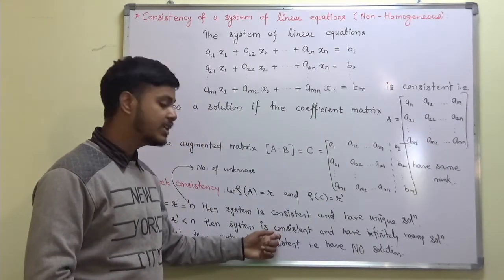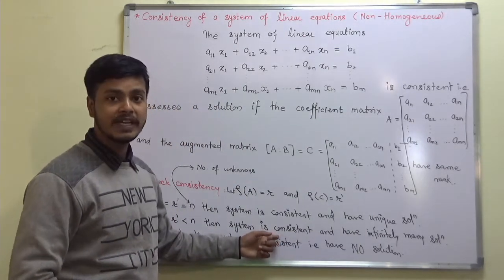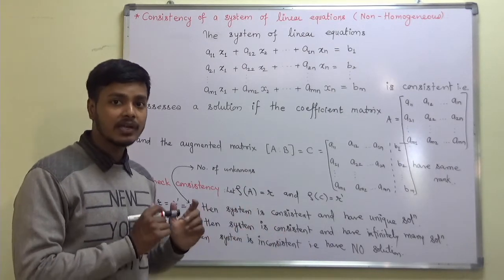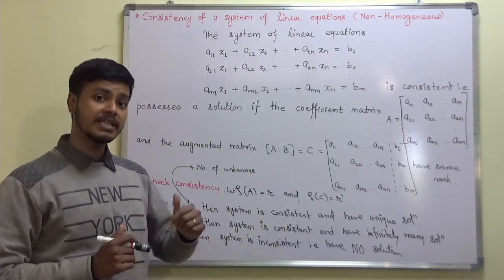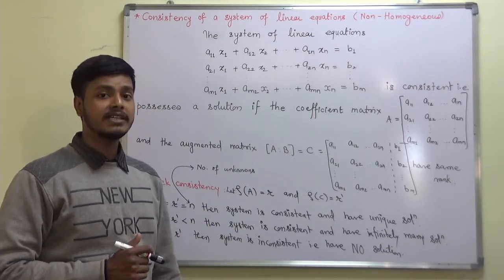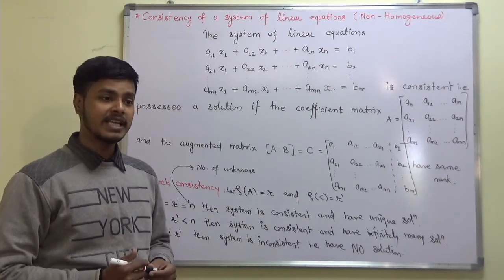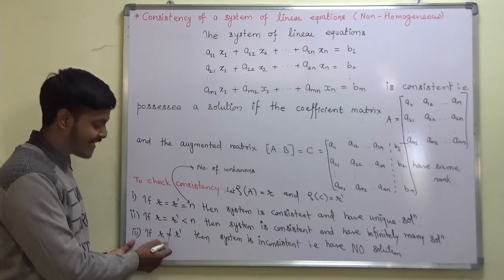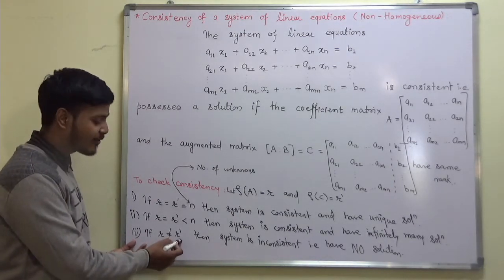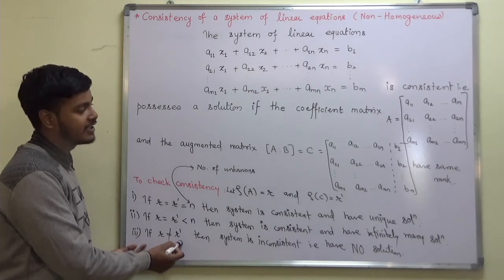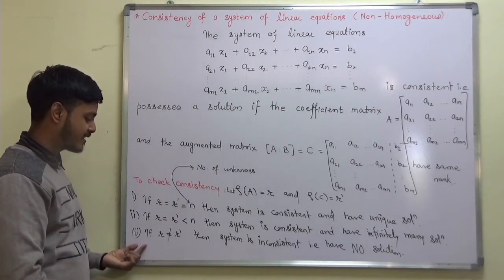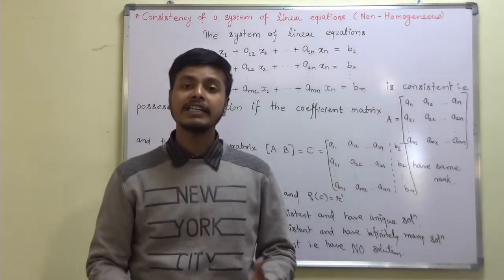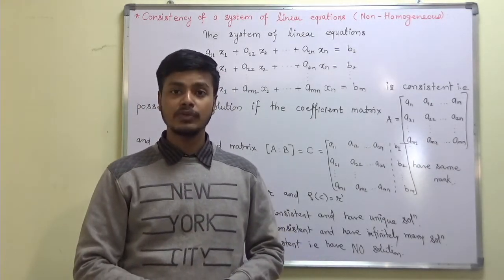In the case of infinitely many solutions, we have to assign arbitrary values to the n minus r unknowns, and express the rest of the unknowns in terms of those n minus r unknowns. If the rank of matrix A is not the same as the rank of augmented matrix C, then the system is inconsistent and has no solution.